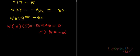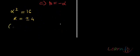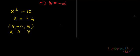Substituting, α · (-α) · 5 = -80, which gives α² = 16, so α = ±4. Therefore, our three roots are +4, -4, and 5.